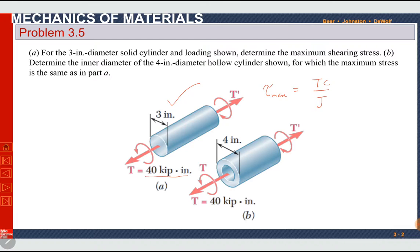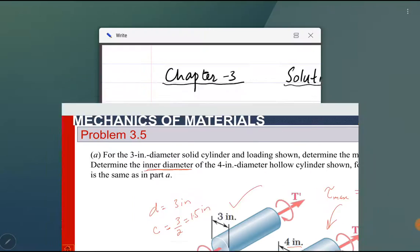Part B is to determine the inner diameter of the four-inch diameter hollow cylinder shown. The outer diameter is four inches and the inner diameter is unknown. The maximum stress in Part B is the same as Part A. So in Part A we will find τ_max, and that same value will be used for Part B. The torque is again the same. For Part A, diameter is three inches, so radius C is 1.5 inches.